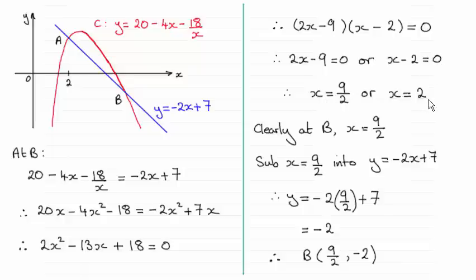But x equaling 2 was clearly the x-coordinate of A. So the x-coordinate of B must be 9 over 2.